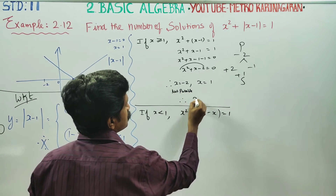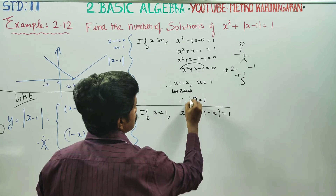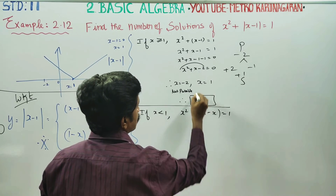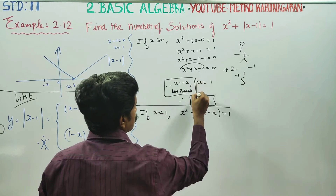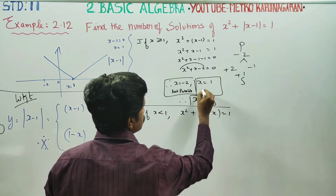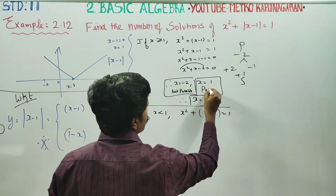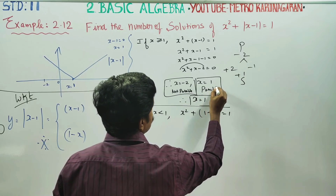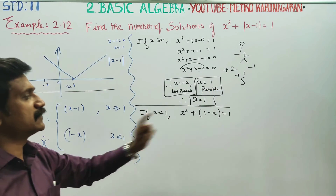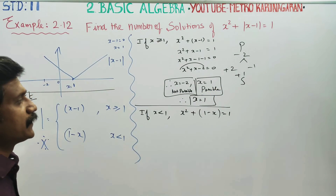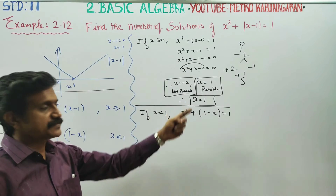x equal to 1 is allowed under the condition x greater than or equal to 1. x equal to minus 2 is not possible. So the only solution from Case 1 is x equal to 1.